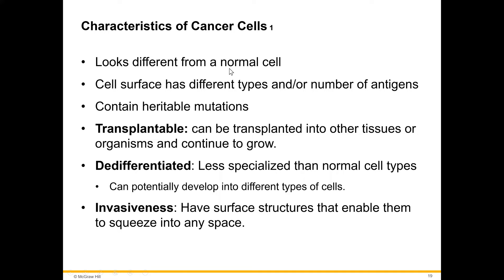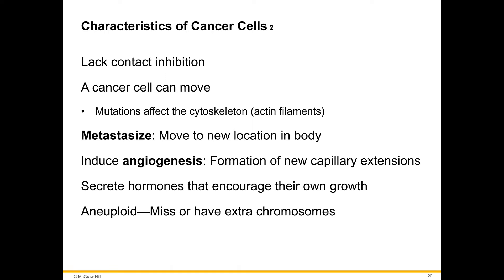To summarize cancer cell characteristics: they have different surface antigens, can be transplanted into other tissues or organisms and continue to grow, are less differentiated, invade spaces, can move and metastasize, grow blood vessels around themselves (bringing more nutrients and oxygen), secrete hormones that increase their own growth, and may have extra or missing chromosomes.